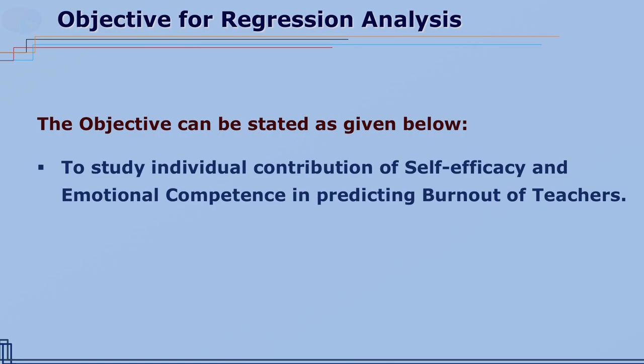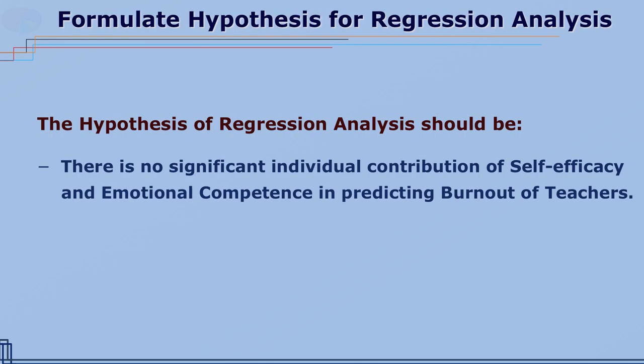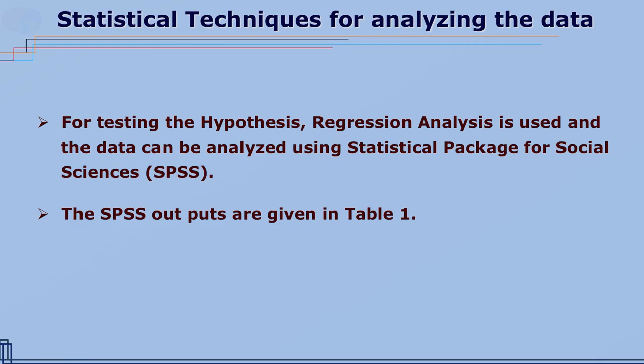Now, how to write objectives whose data can be analyzed with the help of regression analysis. The wording of the objective should be like this: to study the individual contribution of self-efficacy and emotional competence in predicting burnout of teachers. For this objective, the hypothesis can be worded accordingly. For testing this hypothesis, regression analysis is used and the data can be analyzed using SPSS. The SPSS output is given in table 1.